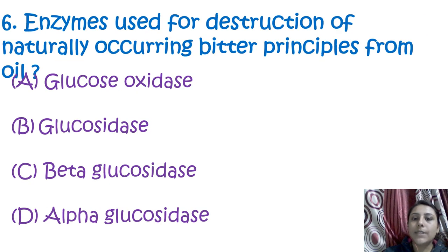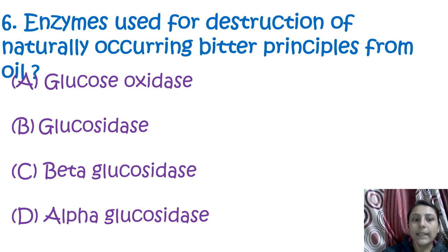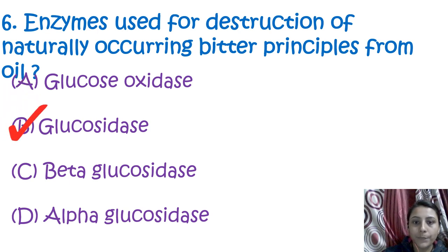The next question is: which enzyme is used for destruction of naturally occurring bitter principles from oil? The answer is glucosidase enzymes.